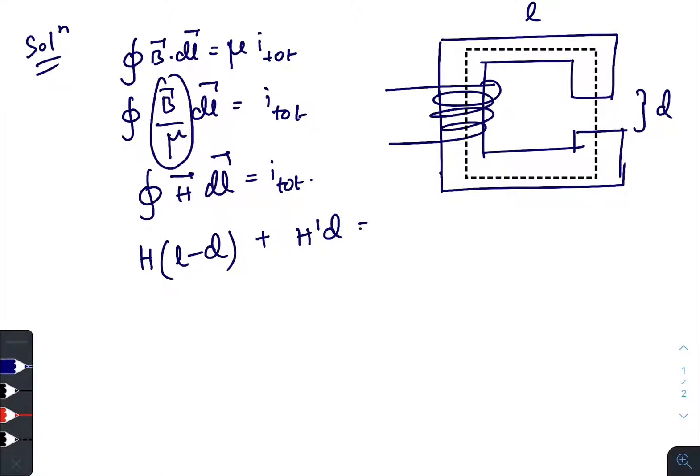Magnetic field strength H, which is inside the iron core, so we can write H equals to B divided by mu r times mu naught into (l minus d). And this one will be B prime divided by mu naught into d equals to I into N.